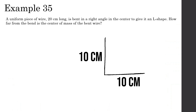A uniform piece of wire, 20 centimeters long, is bent at a right angle in the center to give it an L shape. How far from the bend is the center of mass of the bent wire? We place the zero point at the bend. Since the wire is uniform and bent in the center, each half is 10 centimeters long with mass m, and the mass of each half is concentrated at its midpoint.